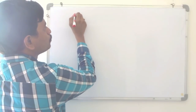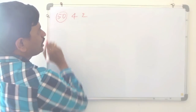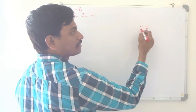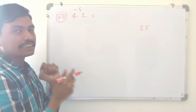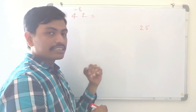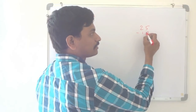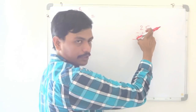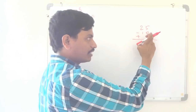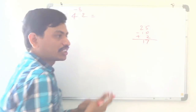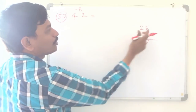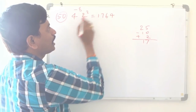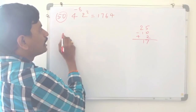Now I will take another number, 42, which is also nearer to 50. 42 is how much lesser than 50? Minus 8. Always take 25 as a base. So 25 minus 8: to subtract 8, we do minus 10 plus 2 — that is faster. So 25 minus 10 is 15, plus 2 is 17. And 8 squared is 64. So 42 squared is 1764.